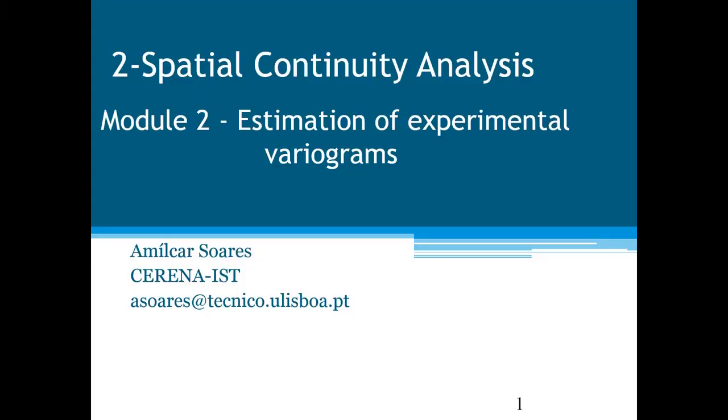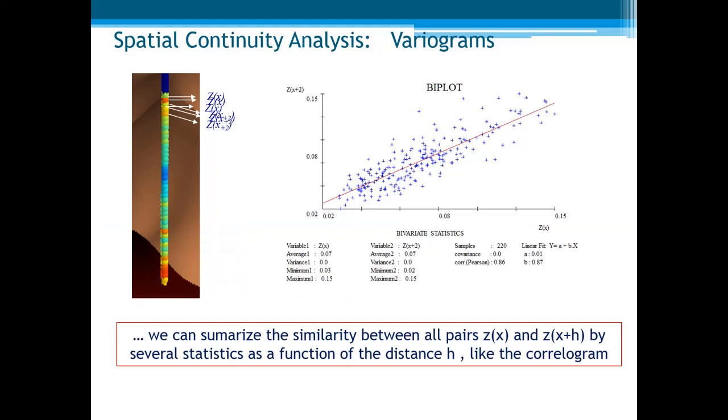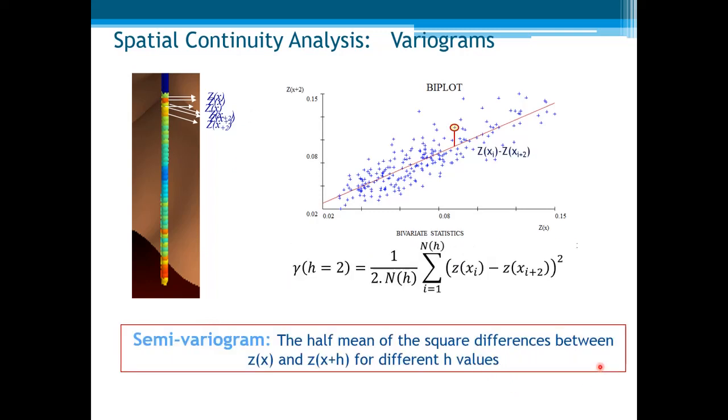In this second module of spatial continuity analysis, we'll see how to estimate the experimental variograms. Let us see again the simple example of just one set of samples from one well. We can summarize the similarity between all pairs z(x) and z(x+h) by several statistics as a function of distance h. But we can calculate other measures of similarity, which is the mean of the square of difference between z(x) and z(x+h) for different h values. This is called semi-variogram, or just variogram.